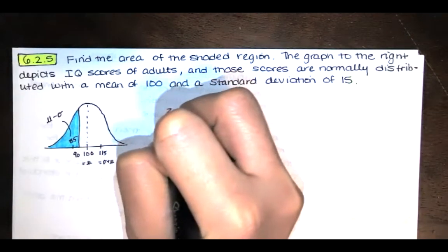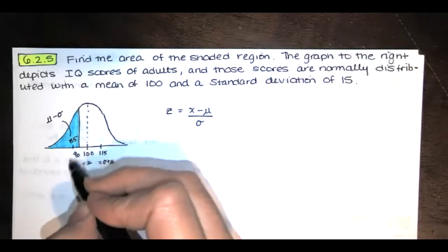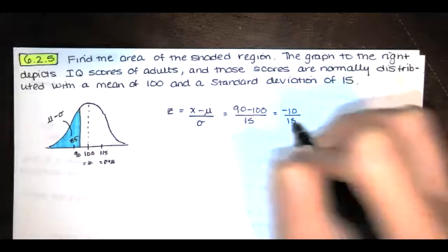Now, in order to find the exact z-score, I will use this formula. We know that z is equal to the x value minus the mean divided by the standard deviation. And in this case, the x value that we're interested in is x equals 90. And then we'll subtract the mean and we'll divide by the standard deviation. So you get negative 10 over 15. So that's negative two thirds or approximately negative 0.67. So that is our z-score.